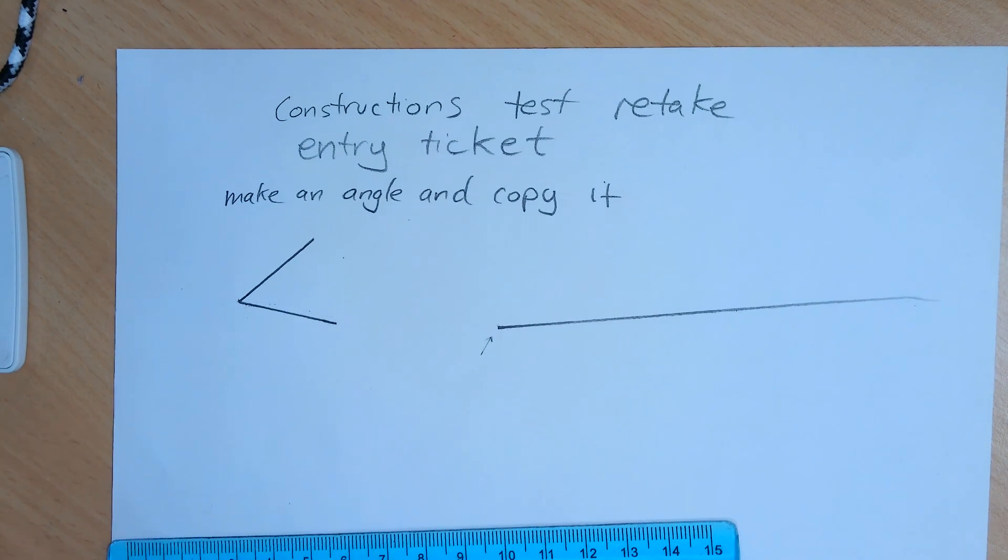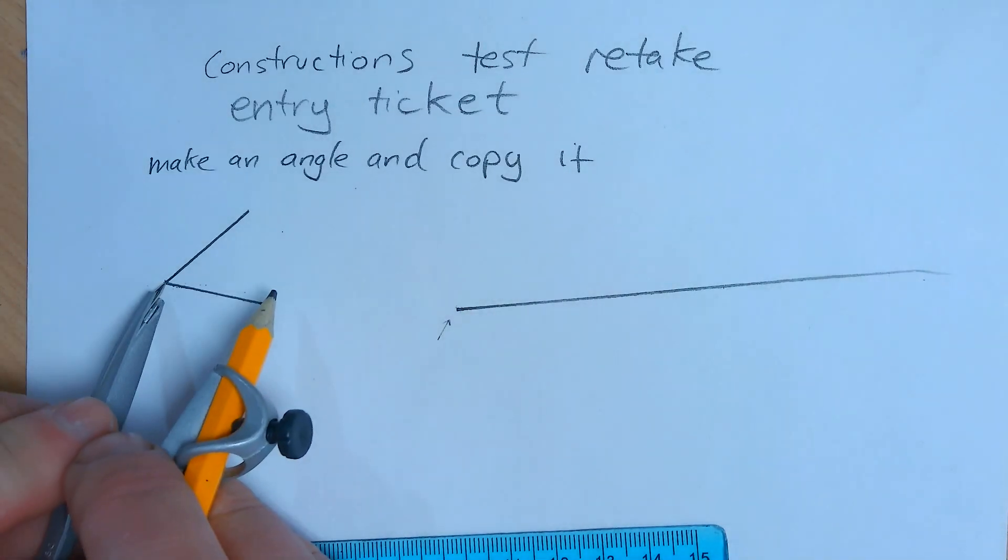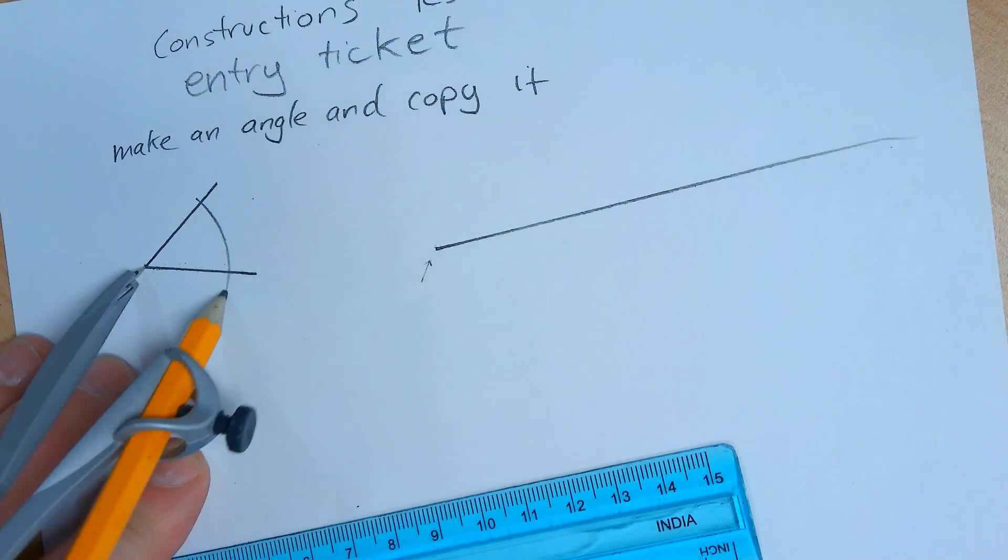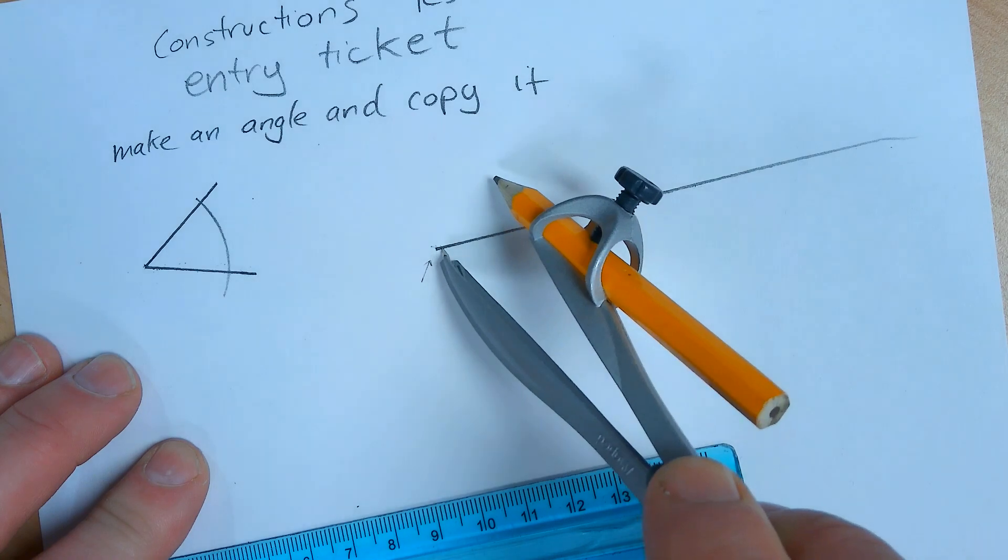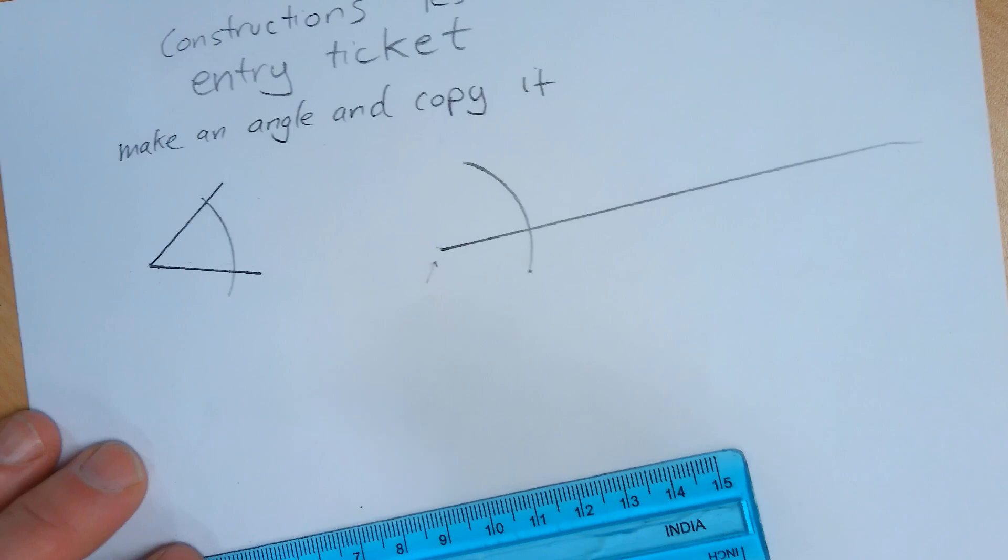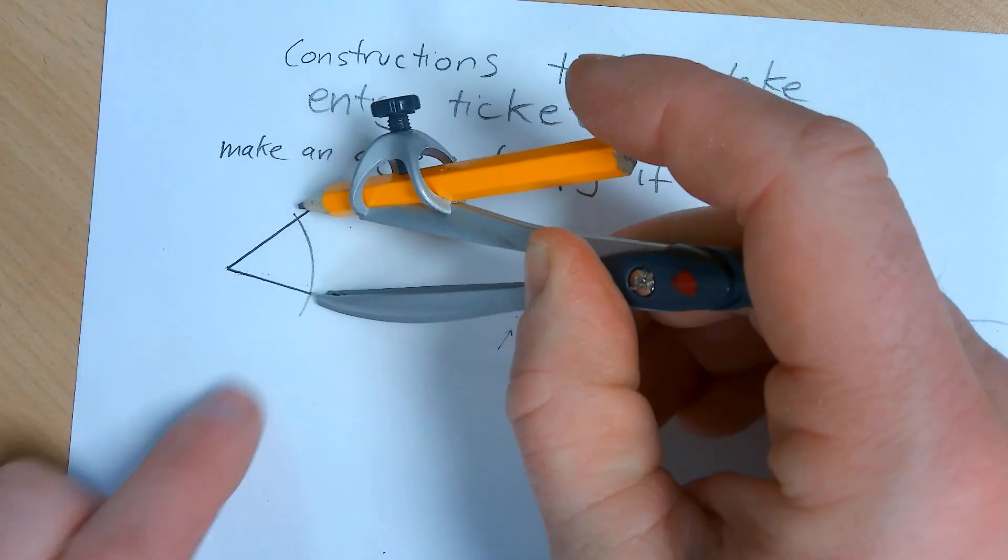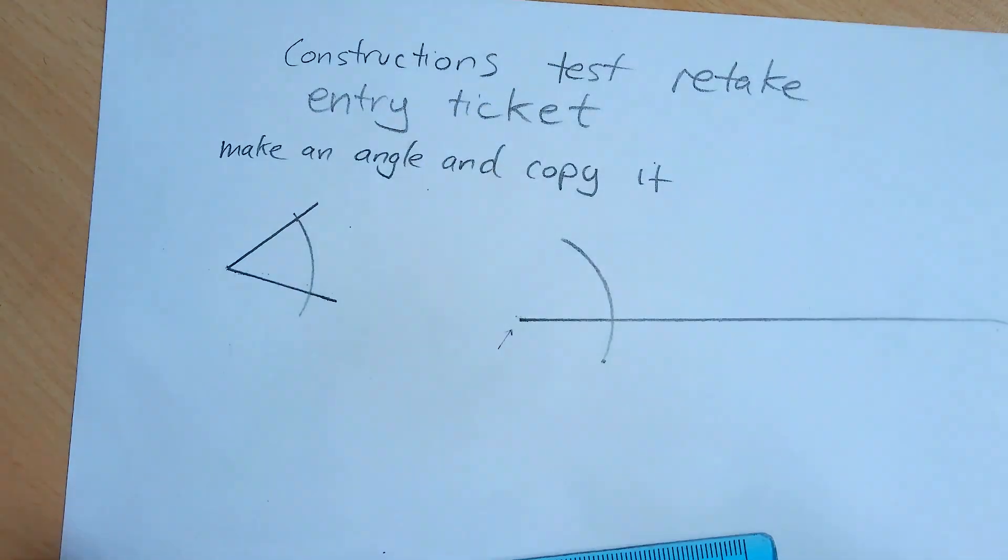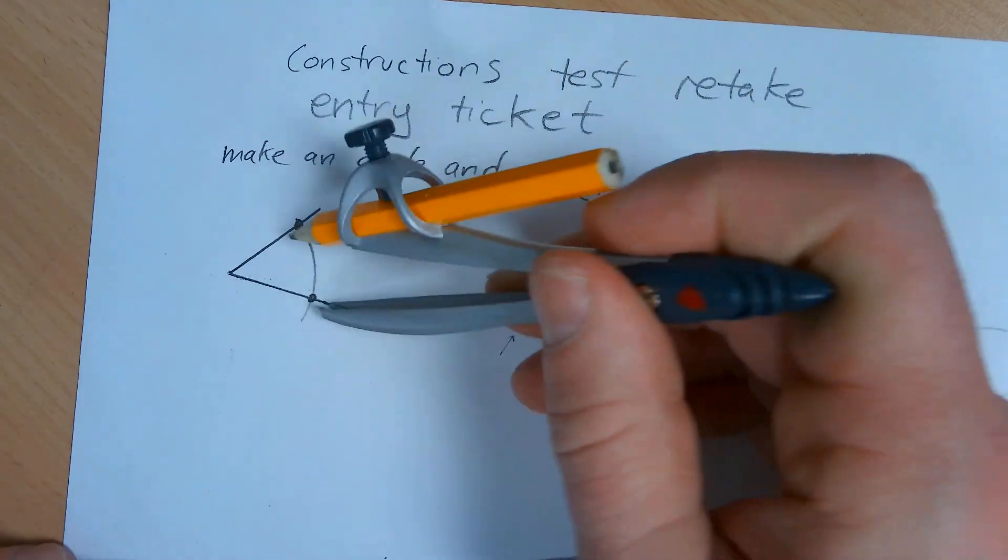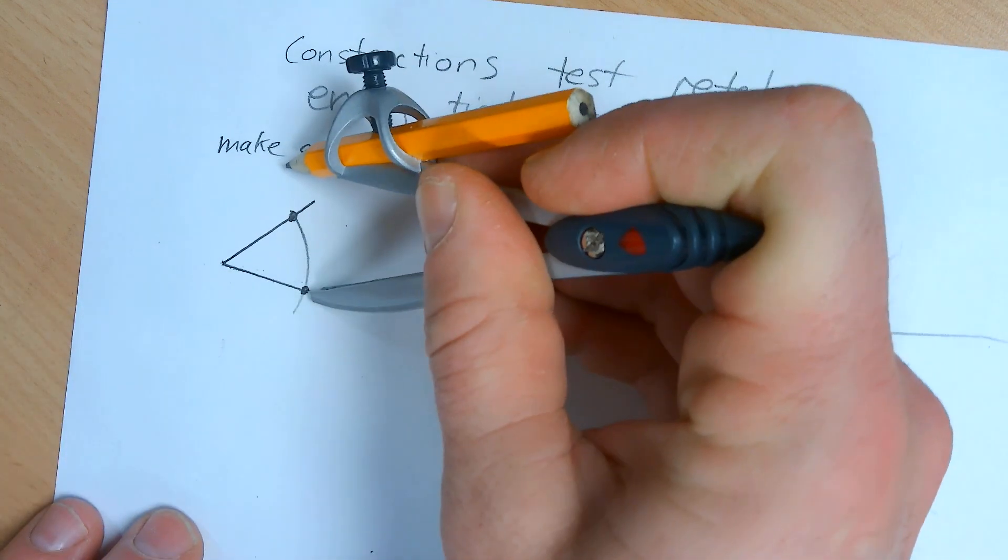The first step is to make a new ray. Now this is our new angle but it's invisible because we don't know where the other part goes. We're going to take a measurement and apply the same measurement to the new angle. We're going to take a second measurement across the angle. Now my pin is going in here and I'm measuring to where it crosses there.